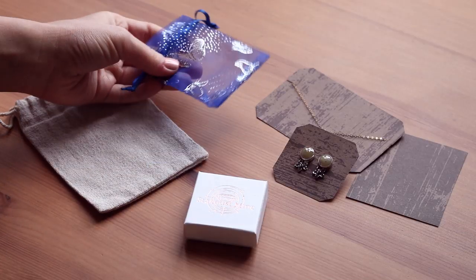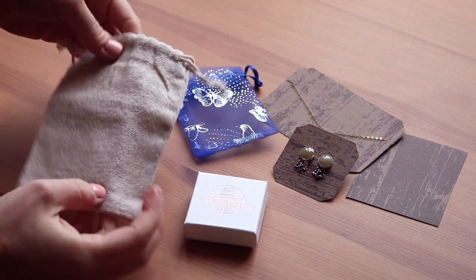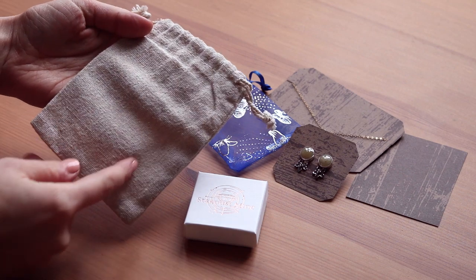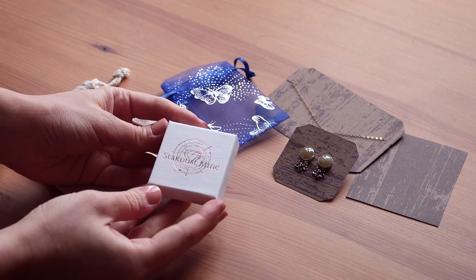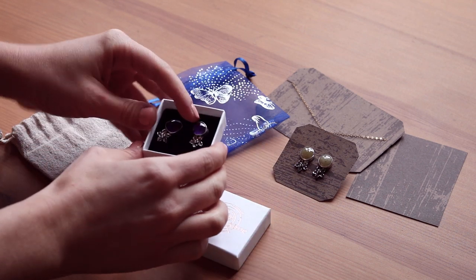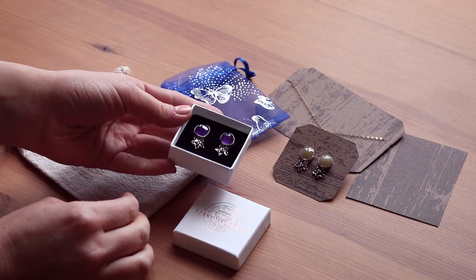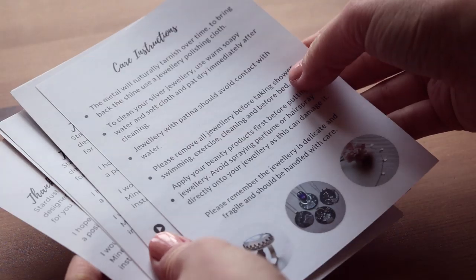You can use organza bags or linen pouches. Great thing about the linen pouches is that you can paint them or print something on them to customize them. And if you're feeling fancy, you can always order your own customized branded jewelry boxes with or without your logo. I've been ordering my boxes for well over a year now at Westpack and I've been super happy with them.